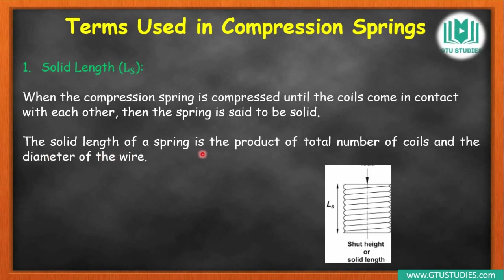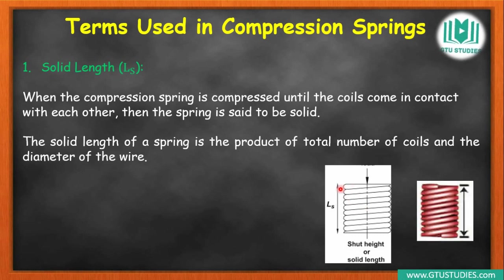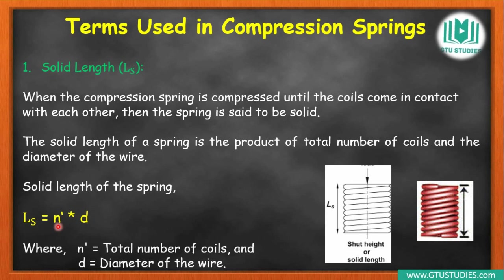The solid length of a spring is the product of the total number of coils and the diameter of wire. Total number of coils into wire diameter gives solid length. The equation is: Ls = n' × d, where n' is the number of coils and d is the diameter of wire.